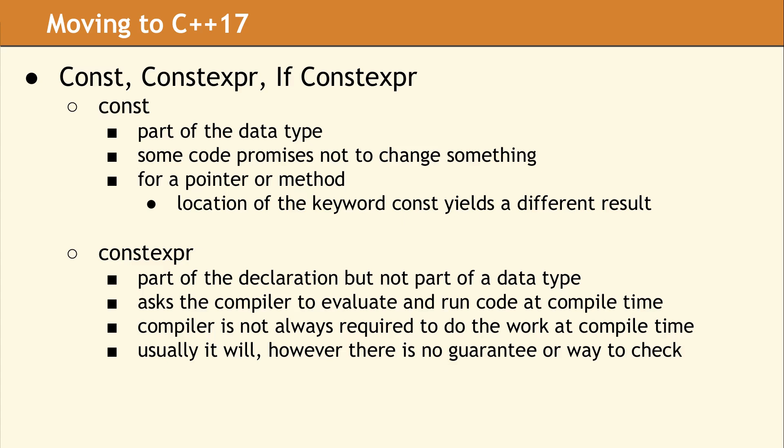The constexpr keyword is a bit different. It asks the compiler to evaluate something at compile time. This keyword is part of the declaration, but does not apply to the data type. Constexpr is just a request and does not actually force evaluation at compile time. More of a strong suggestion. Usually the compiler will do so, but the standard does not actually require evaluation at compile time, at least not with C++17.